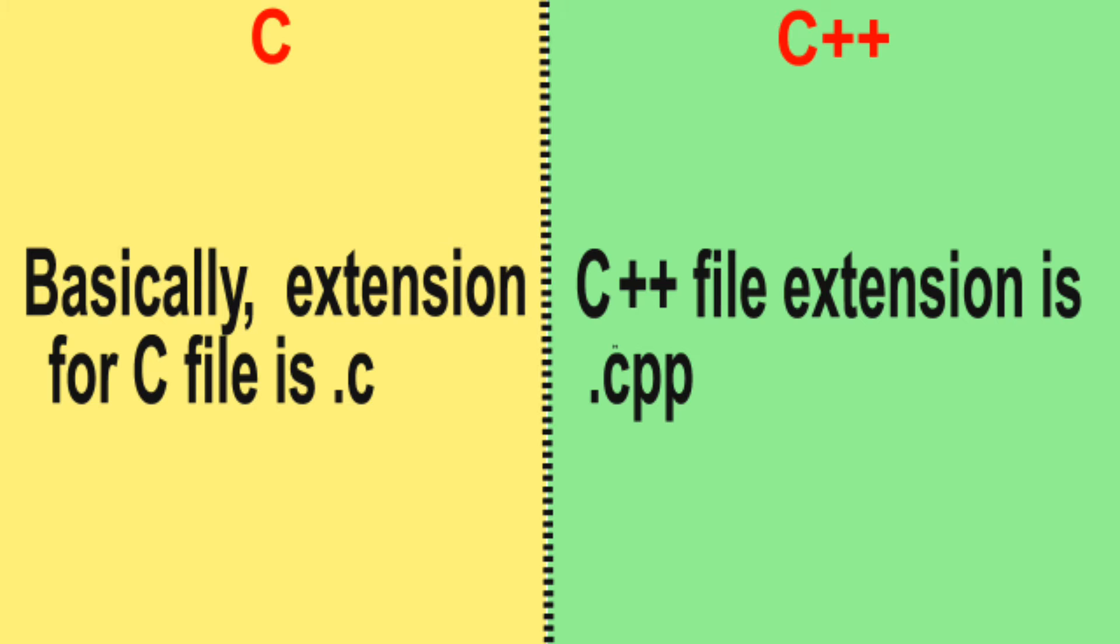Difference number 5: Basically, the file extension for C is .c. The C++ file extension is .cpp.